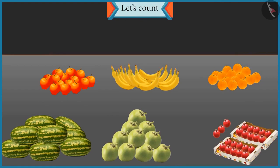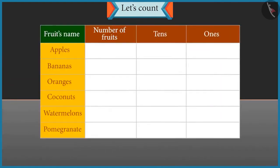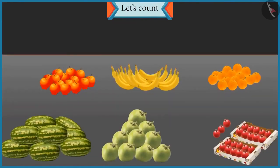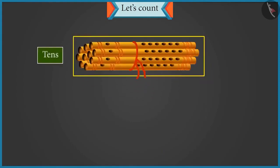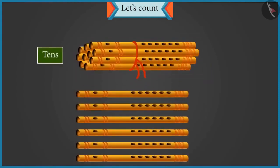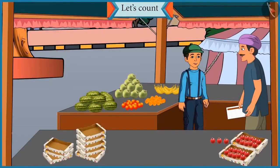Chotu, look — different varieties of fruit are kept here. You have to count the fruits and tell their number. You also have to tell how many groups of ten are there in each, so that we can count them easily. Uncle, a group of ten means tens. In school our teacher taught us that a group of ten is called tens and less than ten are called ones. Okay Chotu, so you count the fruits and tell me how we can show them in tens and ones.